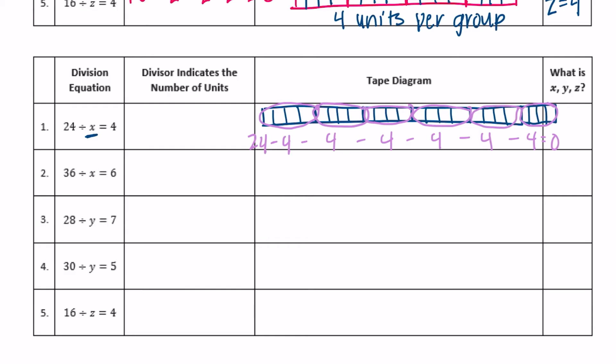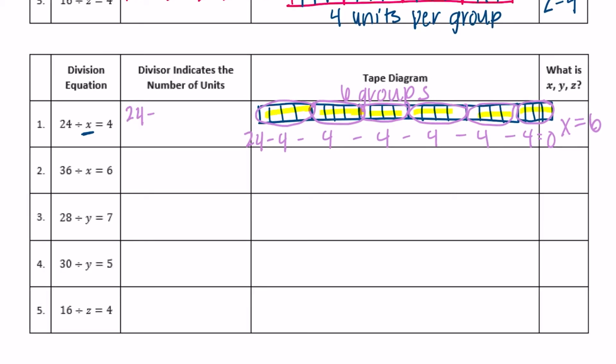And we have six groups. So X is equal to six. It's just a different way of looking at the division equation — you can say 24 minus four, six times.